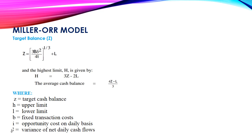For this tutorial we are going to look at the Miller-Orr model. This model was developed by two gentlemen — Martin Miller and Daniel Orr. They made the Miller-Orr model under the assumption that the distribution of daily cash flows is approximately normal.